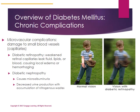Microvascular complications refer to damage to small blood vessels or capillaries. These result in retinopathy — weakened retinal capillaries that leak fluids or blood, causing local edema or hemorrhaging. Diabetic nephropathy causes microalbuminuria, which refers to the presence of the blood protein albumin in the urine. Decreased urine production can result from kidney damage associated with diabetes, and as a result there is increased accumulation of nitrogenous waste.